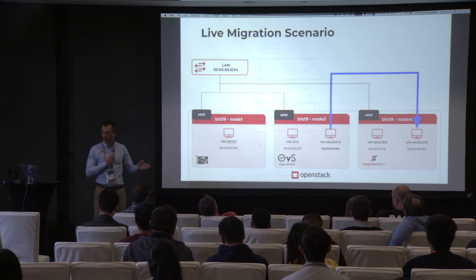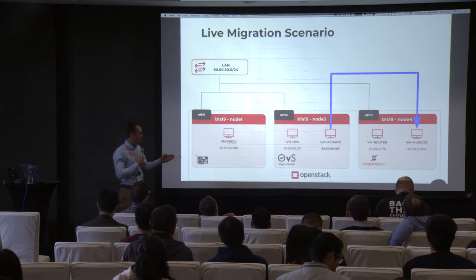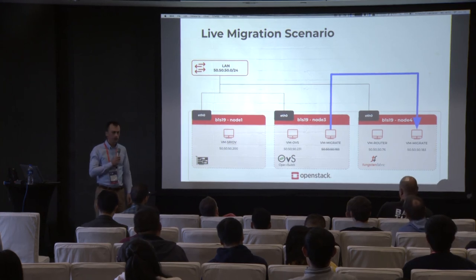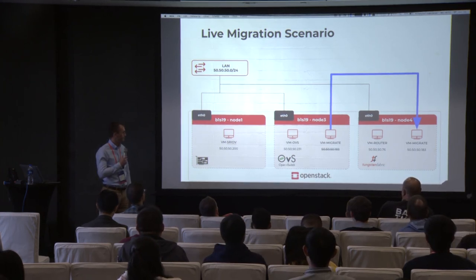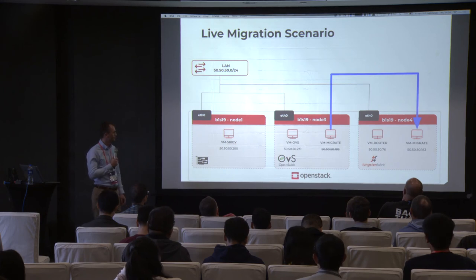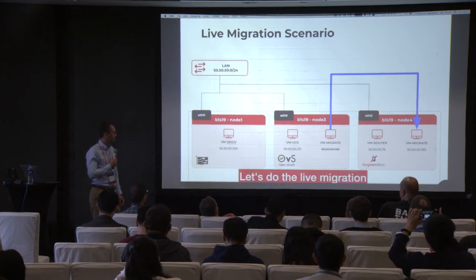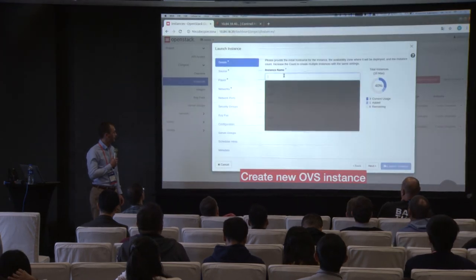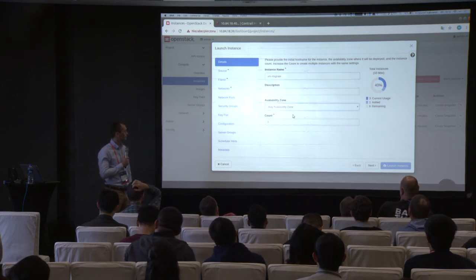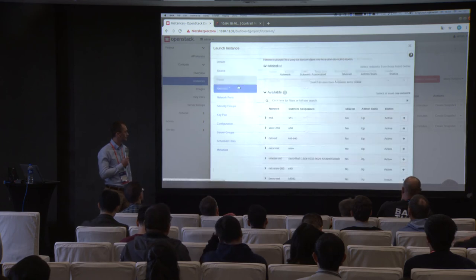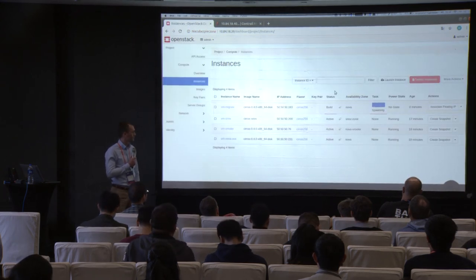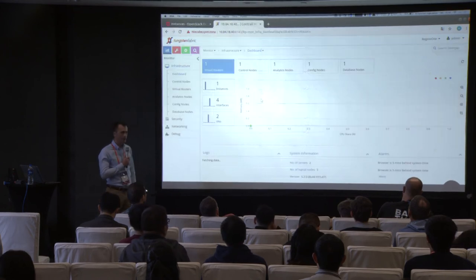Let's do the live migration scenario. We'll create a new VM in OVS and move it — migrated from OVS to Tungsten Fabric vRouter. Creating the VM, which gets assigned IP address 50.50.50.183. We can check in Tungsten Fabric that there's only the one previously created VM — we expect the newly created VM to appear there after migration.